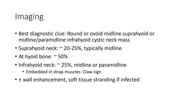Best imaging clue: round or oval midline submental, hyoid, or midline infrahyoid neck mass. Around 20% to 25% are technical or paramedian midline. At the hyoid bone: 50% of cases. Infrahyoid neck: 25% midline and paramedian midline.